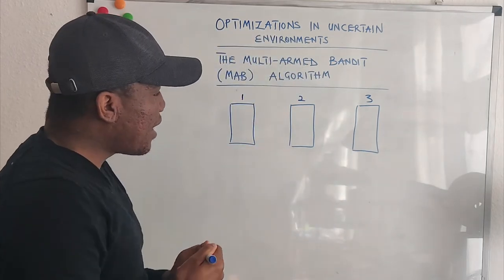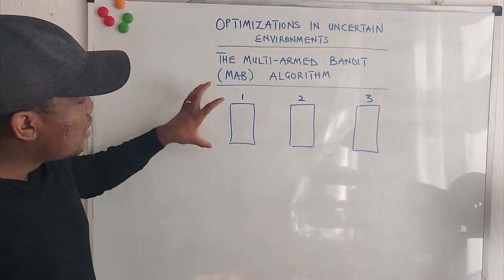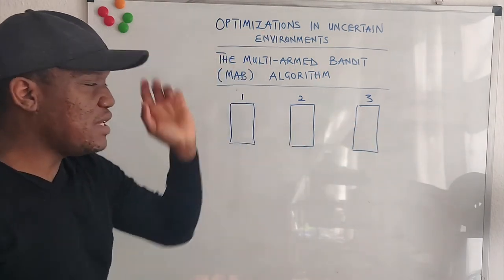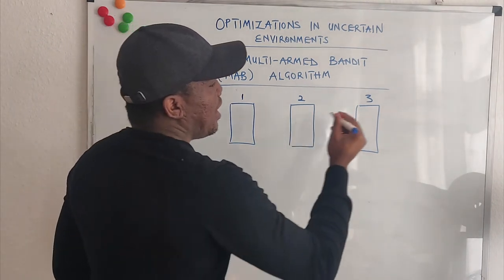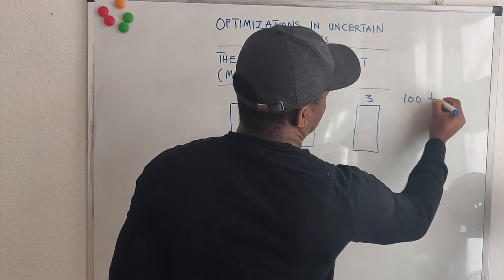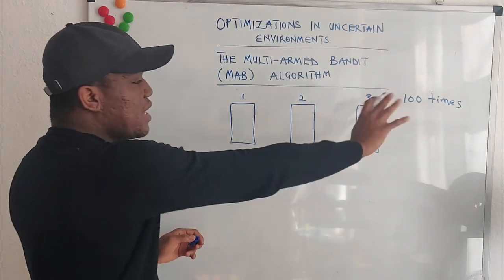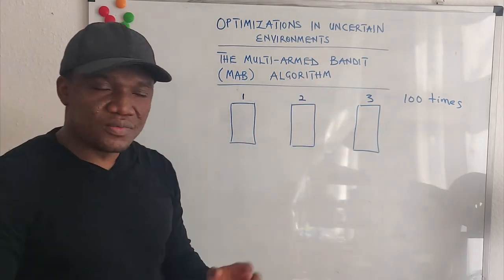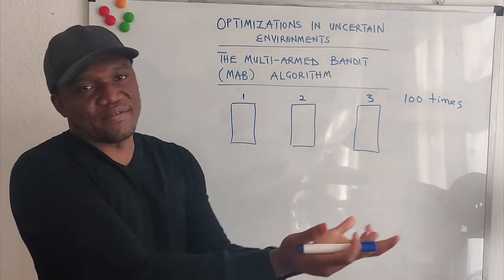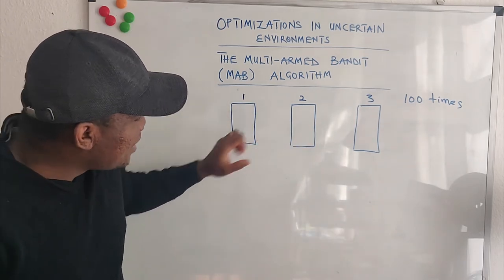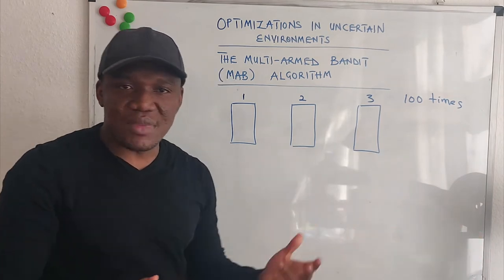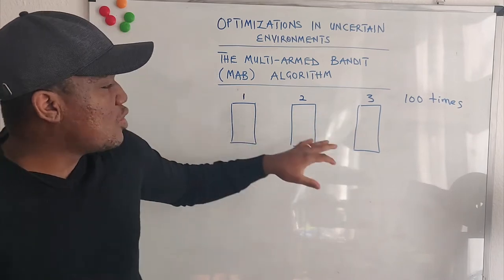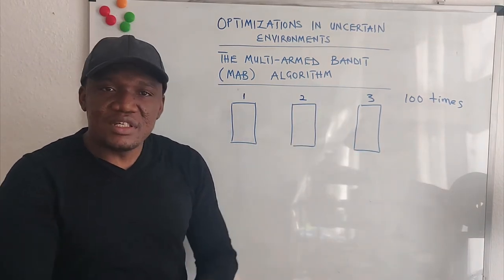And I call you and I inform you that you have 100 times to open any of these doors. So you have 100 times to open any of these doors. And whenever you open any door, the door has a probability of giving you some gift. Let's say opening any door gives you a chance of getting some money, and the monies that you get from each door could be different, and the probability could also be different.